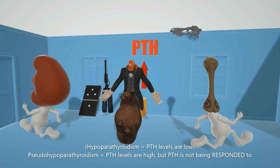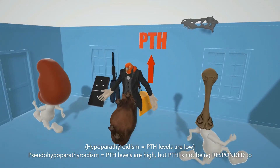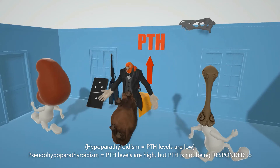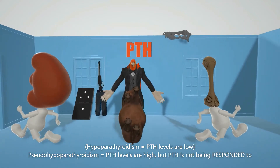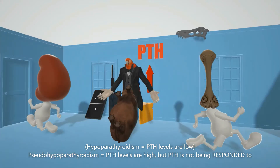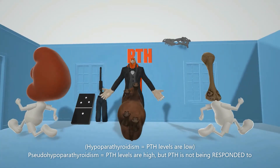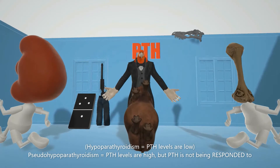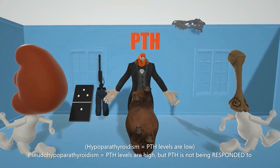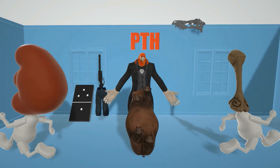Look behind this guy — the PTH is elevated. The problem, however, is that there's no response to it. The kidney and bones are not responding to it, and that's why in this scene the kidney and the bone guy are running away and ignoring this guy. This helps us remember that in pseudo-hypoparathyroidism, the kidney and the bones are not responding to parathyroid hormone.